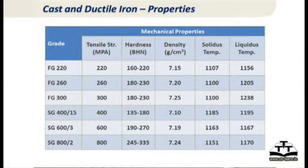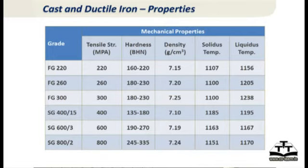Strength is always given as a range of values, since the actual strength depends on wall thickness and the cooling rates that determine grain formation. For calculation purposes, take the average nominal value. Looking at the solidus and liquidus temperatures in the table, most irons are poured around 1200°C, or a little more for a high-grade ductile iron.